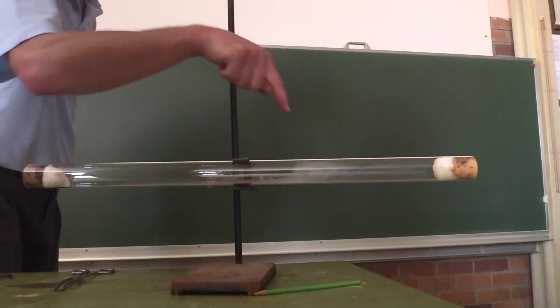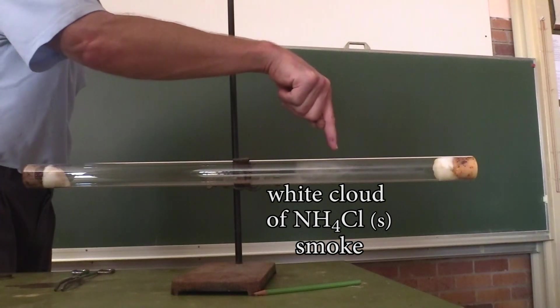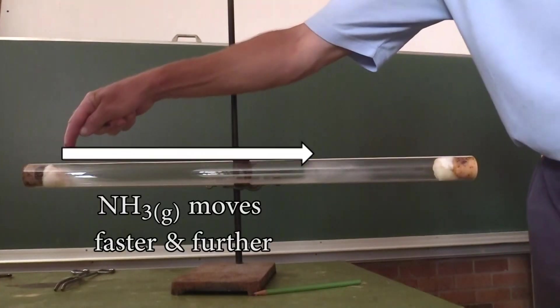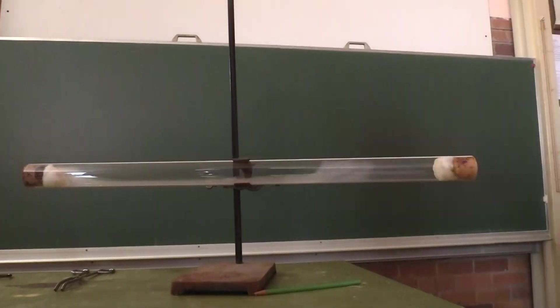After about 30 seconds or so we start seeing a white cloud develop a little off-center. So the ammonia has moved further than the hydrogen chloride.